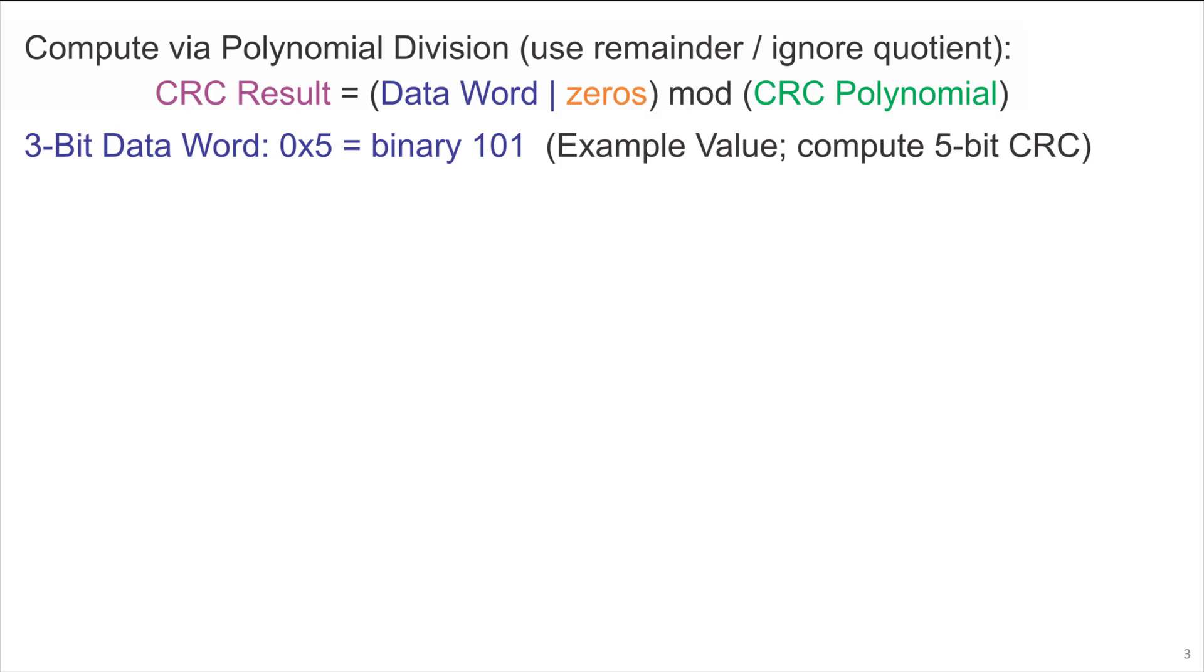We'll use an example of a 3-bit data word, hexadecimal 5, binary 101. We'll compute a 5-bit CRC based on that 3-bit data word. To do this, we append a 5-bit zero check value as a starting value to then compute the real check value at the end.